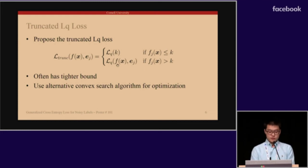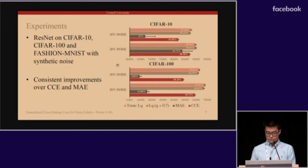In practice, we used alternative convex search algorithm for optimization with the loss function. Lastly, we empirically examined the performance of proposed loss functions using ResNet on various datasets with manually injected noise and achieved consistent improvement over both cross-entropy and mean absolute error. The bar charts on the right illustrate a small part of our result.